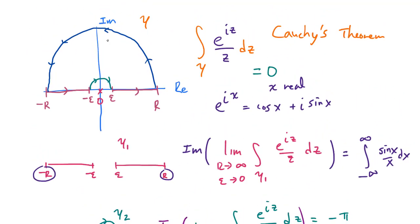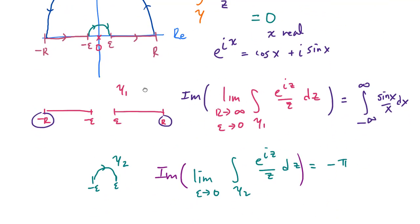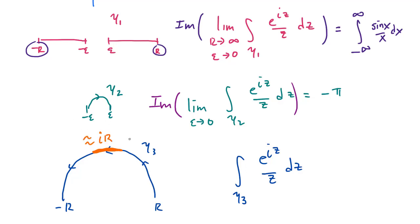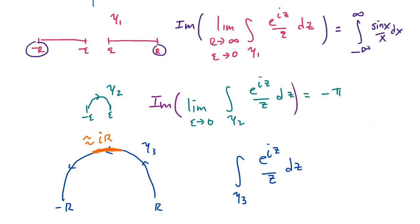Finally, we have the large semicircle path to analyze — let's call it gamma 3, going from r around to minus r. This is the hardest part. Along the top of this path, you are approximately at the point ir. This is the reason we really wanted the exponential instead of sine: e to the iz evaluated at ir is e to the minus r (since i squared is negative 1), and this goes to 0 very quickly as r goes to infinity. So we expect that the limit as r goes to infinity of the integral along gamma 3 is actually 0.